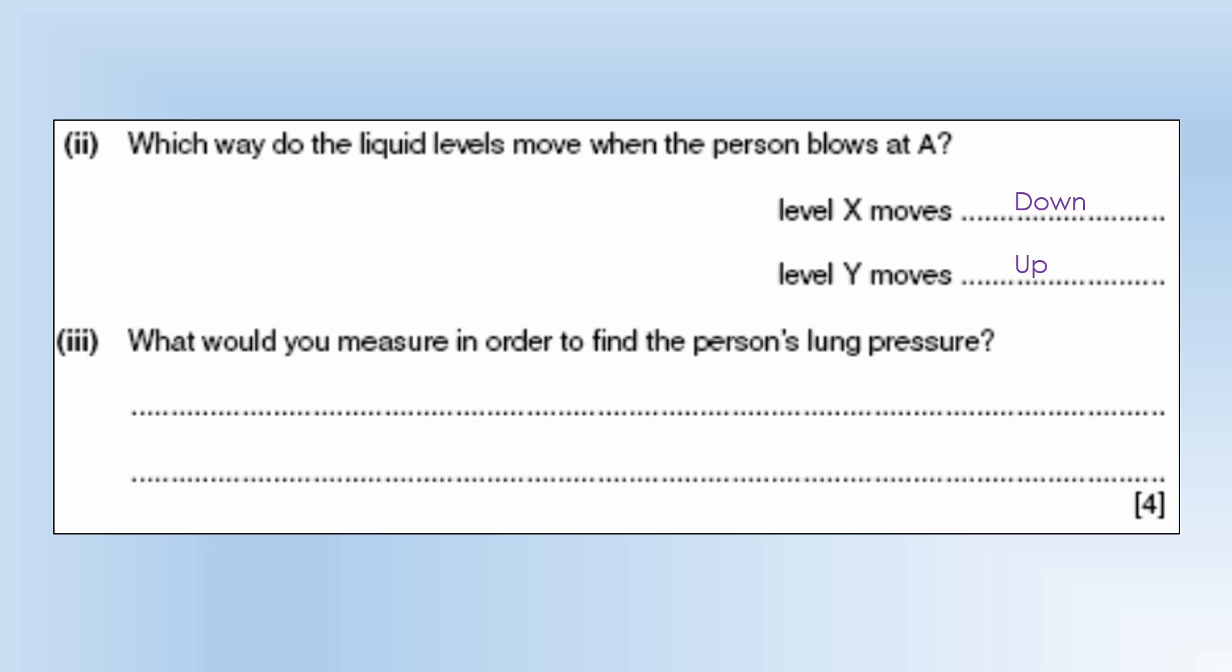What would you measure in order to find the person's lung pressure? Well you'd need to know two things. You'd need to know what atmospheric pressure was and you'd also need the height difference on both sides and if you can measure those two things you can figure out what the lung pressure is.